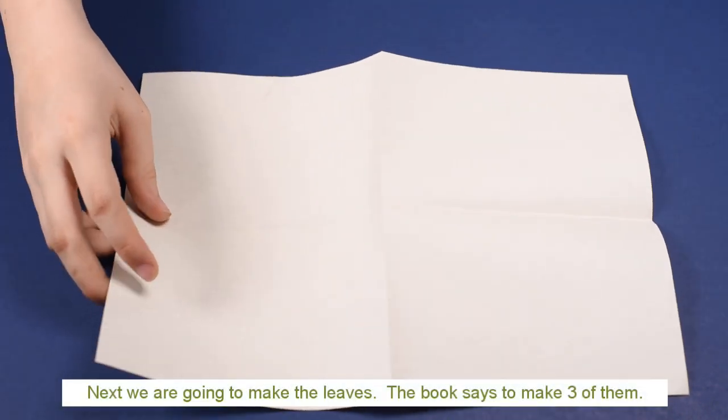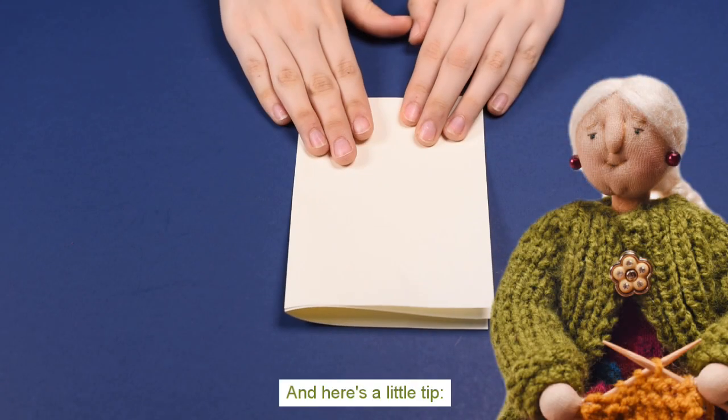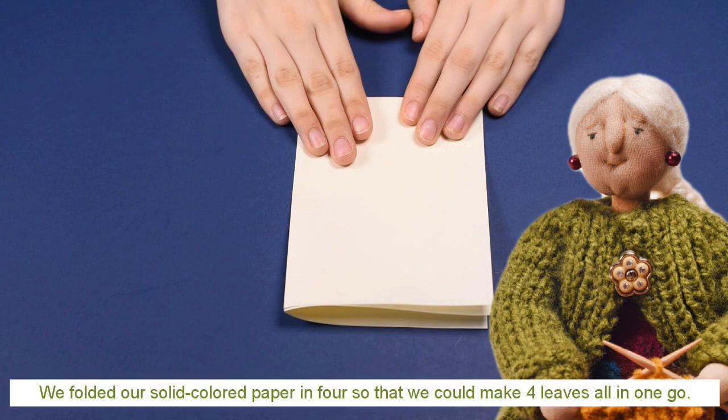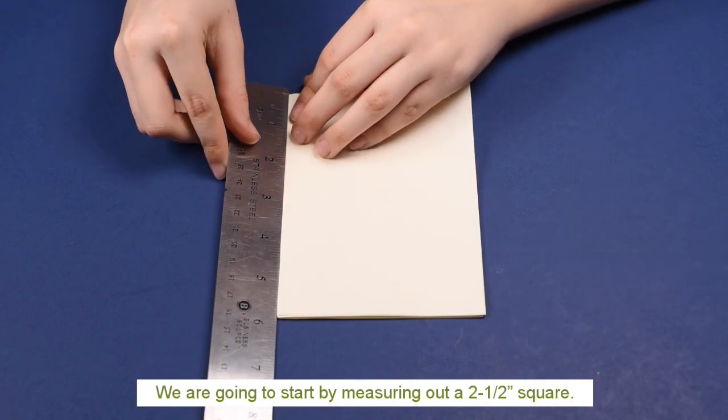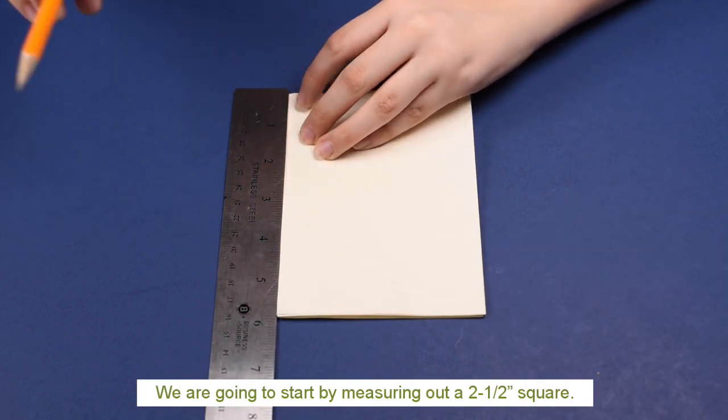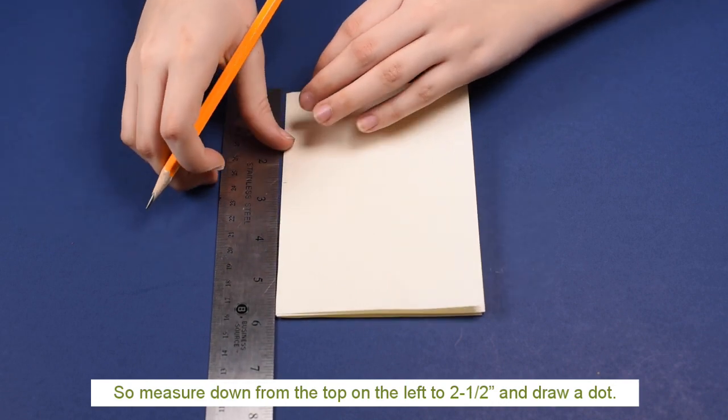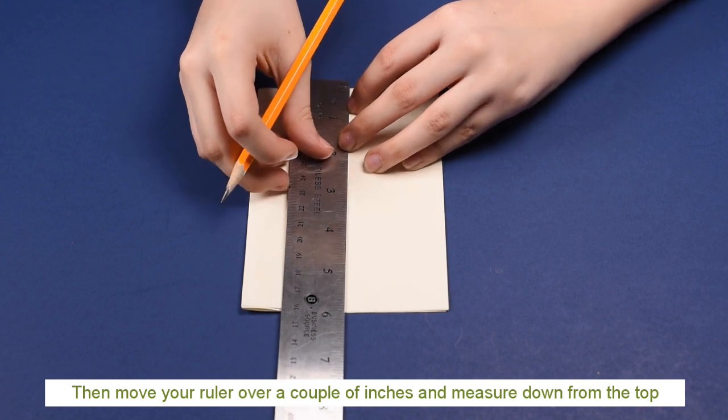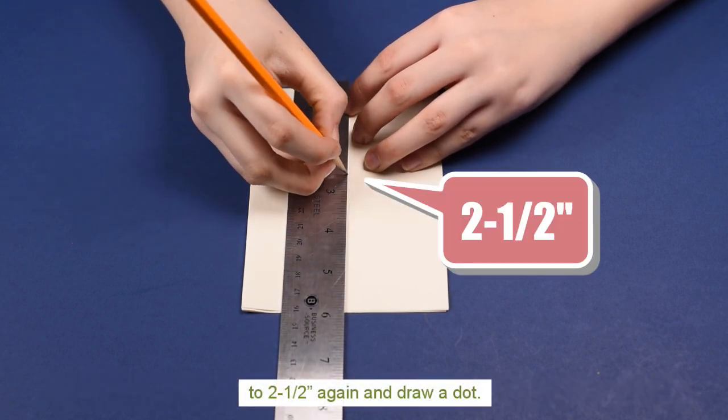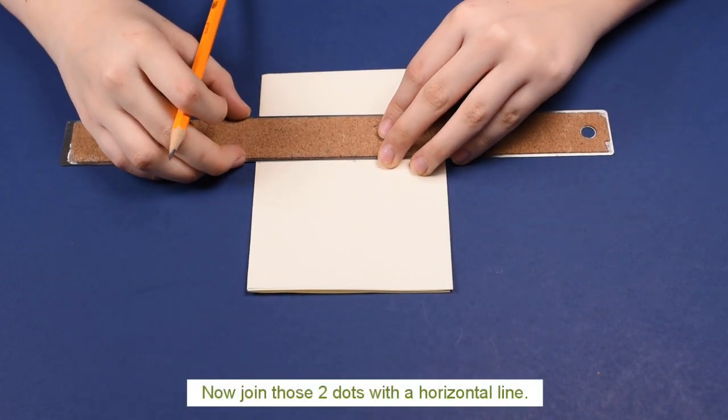Next, we're going to make the leaves. The book says to make three of them. And here's a little tip. We folded our solid-color paper in four so that we could make four leaves all in one go. We're going to start by measuring out a two-and-a-half-inch square. So measure down from the top on the left to two-and-a-half inches and draw a dot. Then move your ruler over a couple of inches and measure down from the top to two-and-a-half inches again and draw a dot. Now join those two dots with a horizontal line.